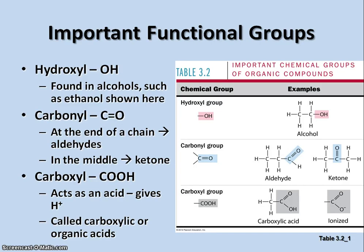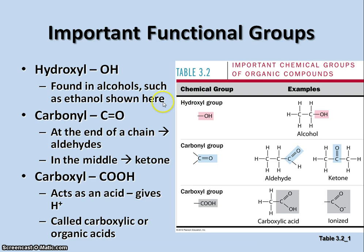There are a number of different functional groups — we're going to talk about six of them, four of which are more commonly referred to in biology. The hydroxyl group, or OH, is found in alcohols such as ethanol, which is ethyl alcohol. The functional group is the OH, or hydroxyl group.